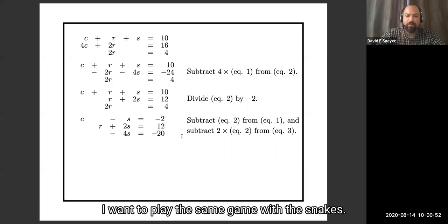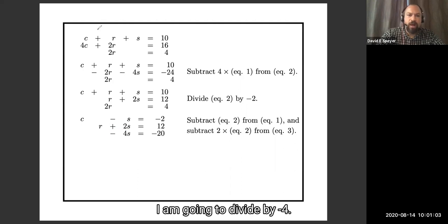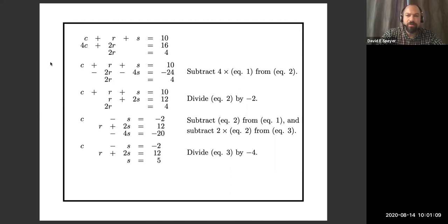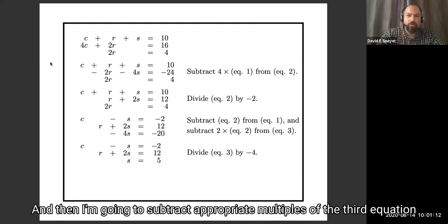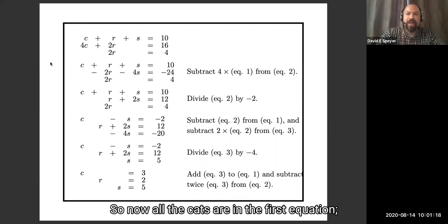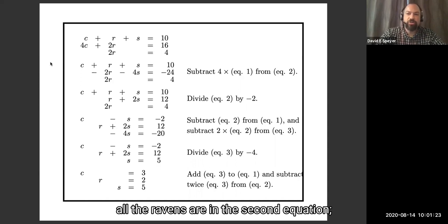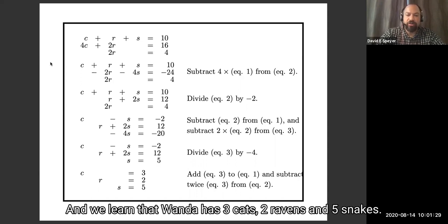Finally, I play the same game with snakes. Right now snakes have a coefficient of minus 4. I divide by minus 4 so the coefficient becomes 1. Then I subtract appropriate multiples of the third equation from the first and second equations. Now all the cats are in the first equation, all the ravens are in the second equation, and all the snakes are in the third equation. We learn that Wanda has three cats, two ravens, and five snakes.